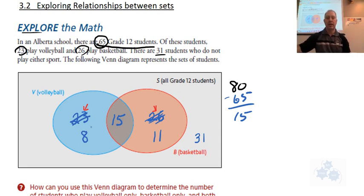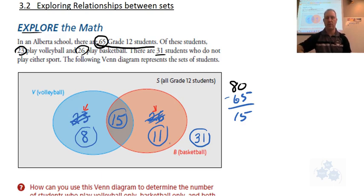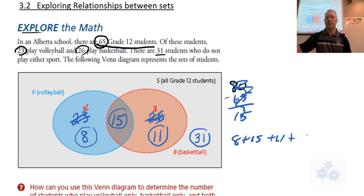Now we can add up 8 plus 15 plus 11 plus 31. That's 23, then 34, and 31. 34 and 31 — have I got that right? 34 and 31, thank you. So these numbers add up now — 8 plus 15 plus 11 plus 31 is 65.